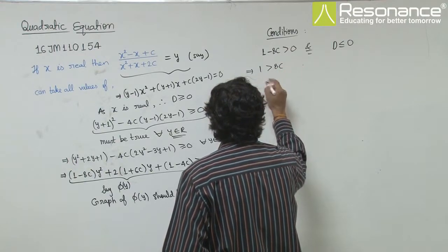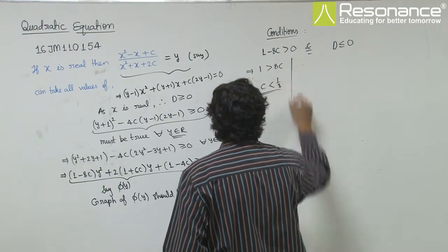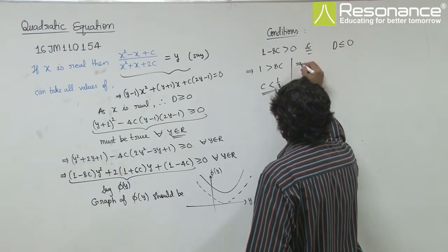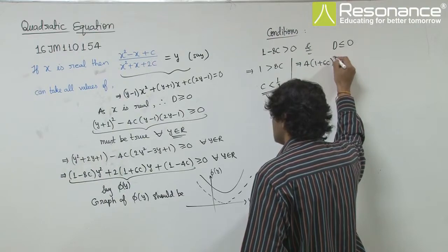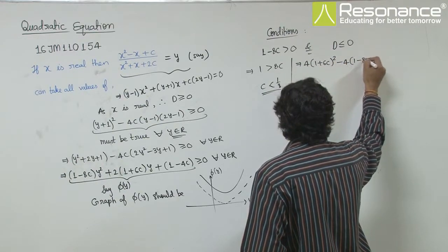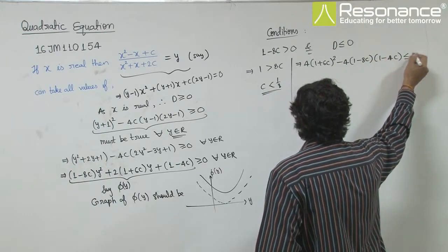So, the first one is very simple. From that we get c should be less than 1 by 8. Now let's solve the discriminant. So, this is 4 times (1 plus 6c) whole square minus 4(1 minus 8c)(1 minus 4c), this should be less than equal to 0.